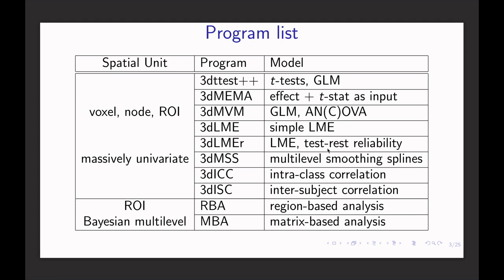The next program is 3D MEMA — Mixed-Effects Multilevel Analysis. The multilevel aspect means we take both betas and the t-statistic as input. The rationale is that the t-statistic contains the uncertainty information about each beta value. We can use that as leverage to provide a weighted average, to gain more accurate estimates at the population level.